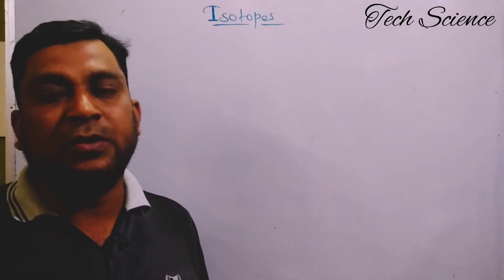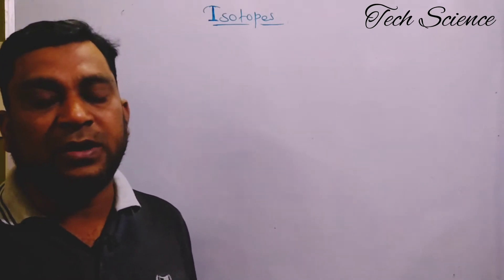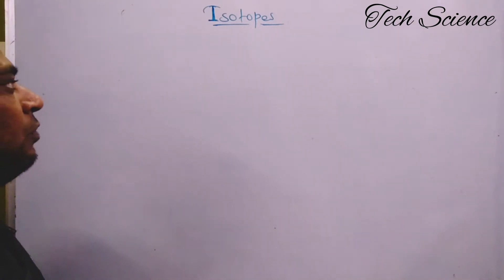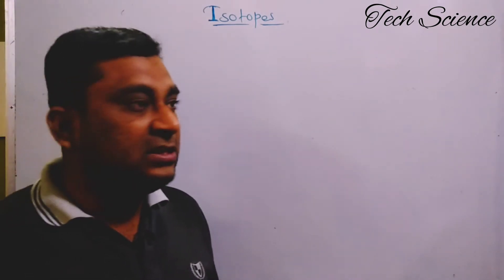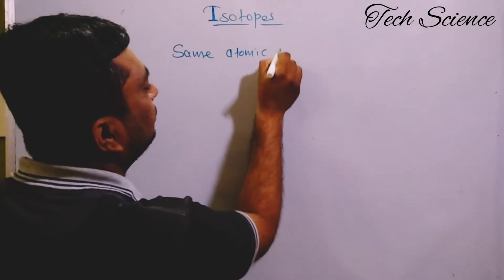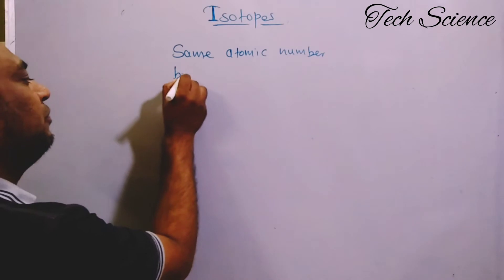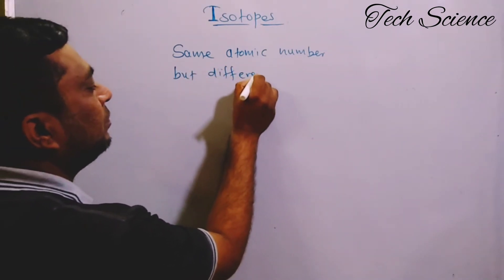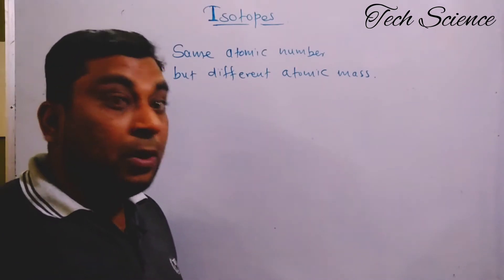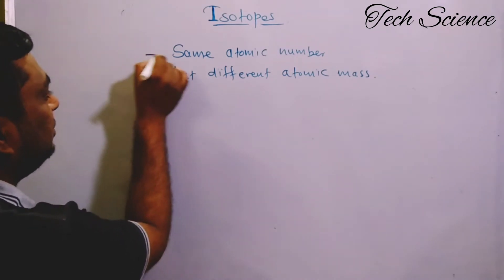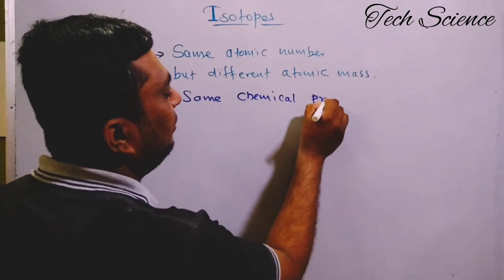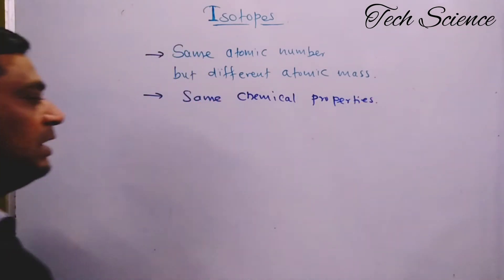All these things were already discussed in the video on the structure of an atom — the link is in the description if you want to review it. Now, what about isotopes? The definition of isotopes: isotopes are atoms having the same atomic number but different atomic mass number. A second key point is that isotopes have the same chemical properties, although they have different atomic masses.